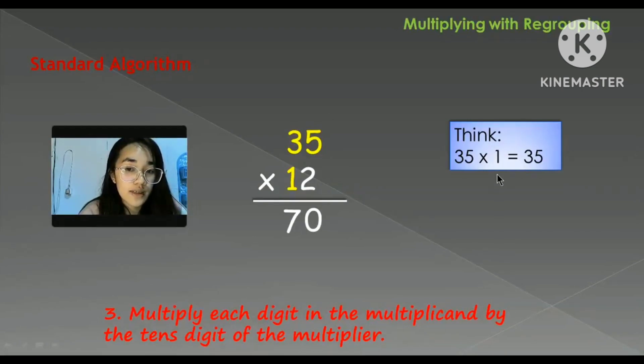So 35 times 1 is equal to 35, because any number multiplied by 1 is equal to the number itself. So since there is no number here, just simply put 0.